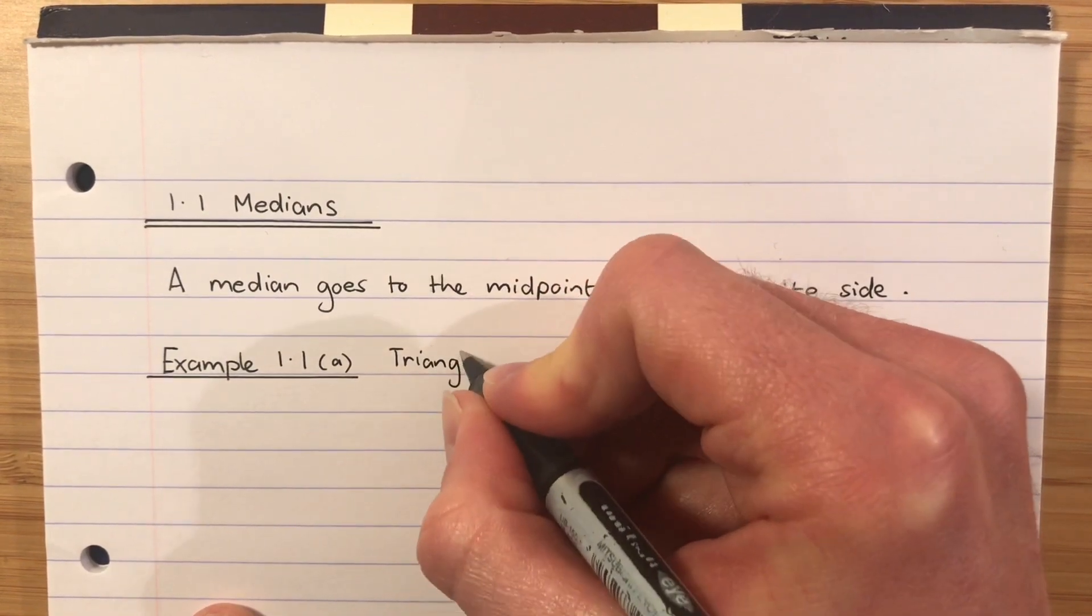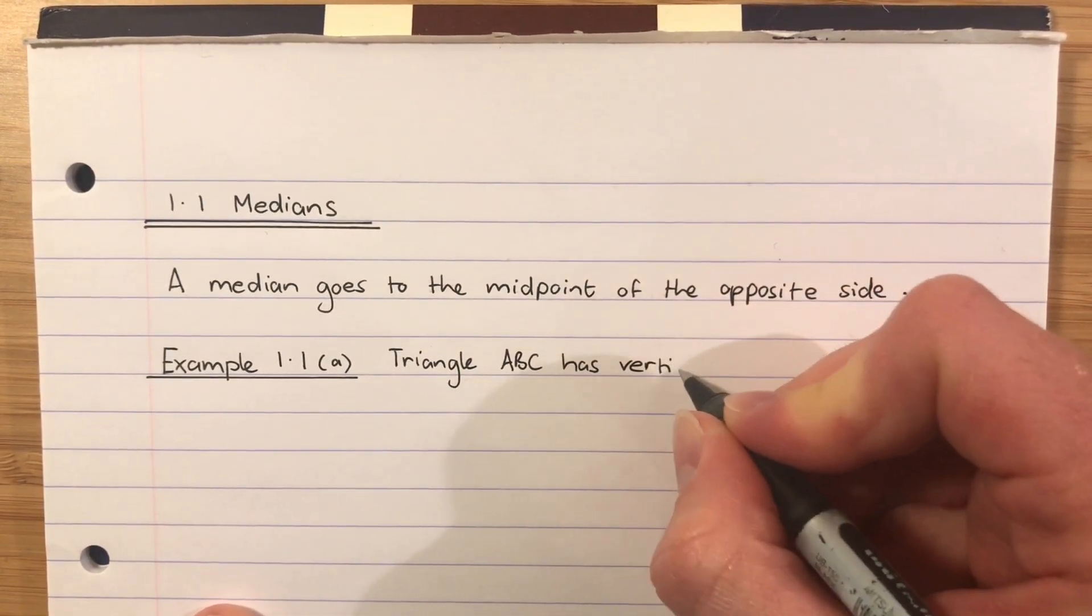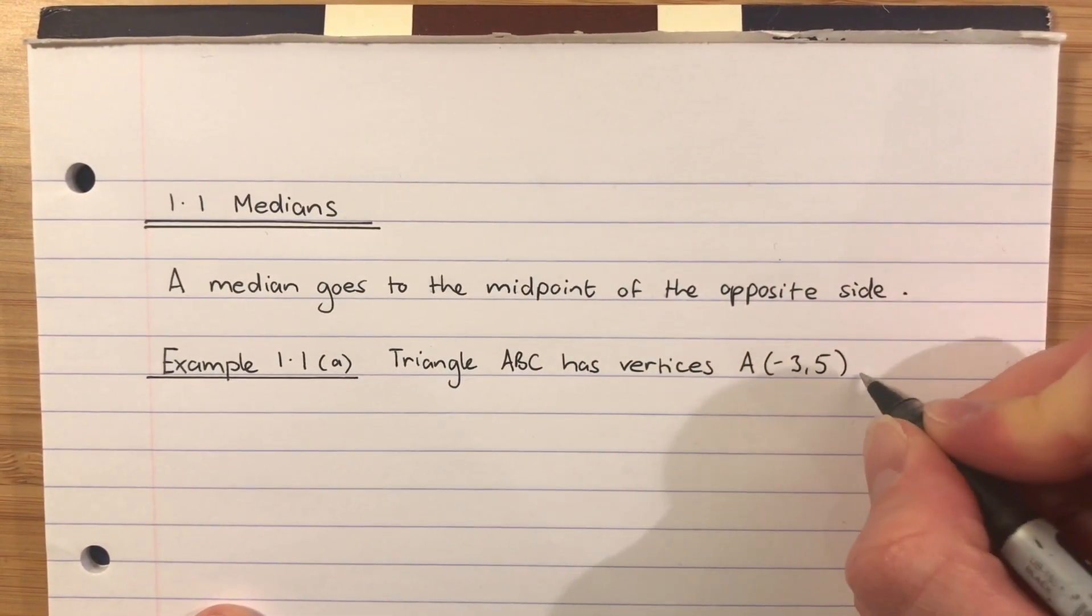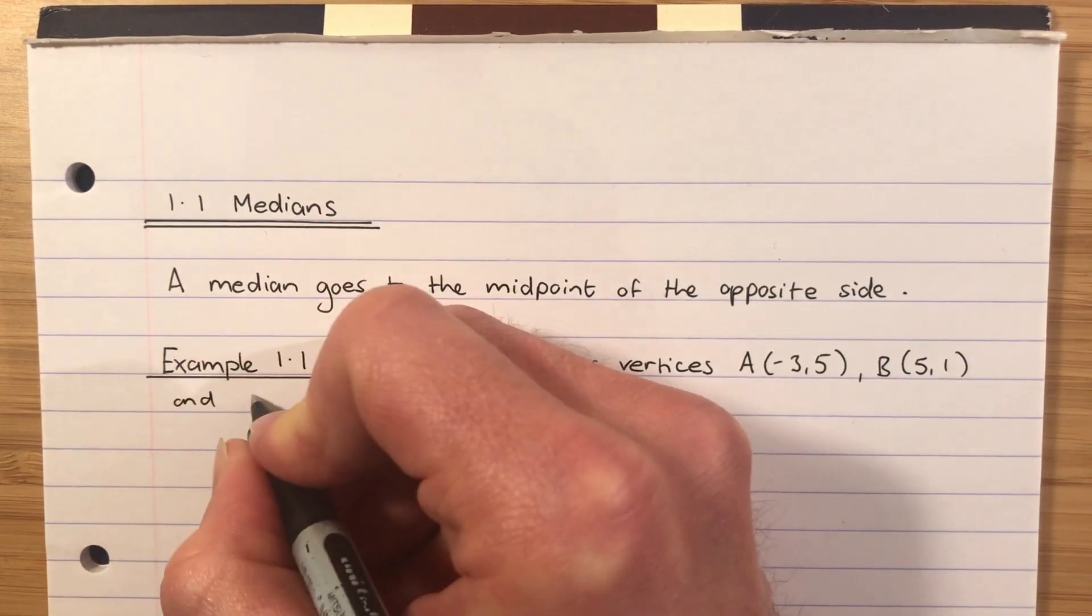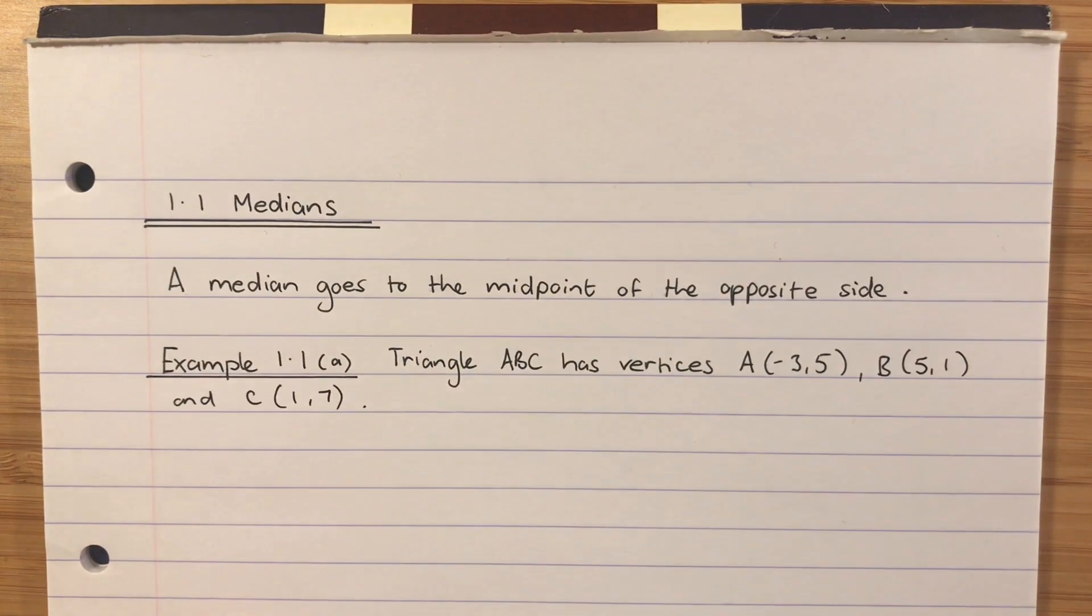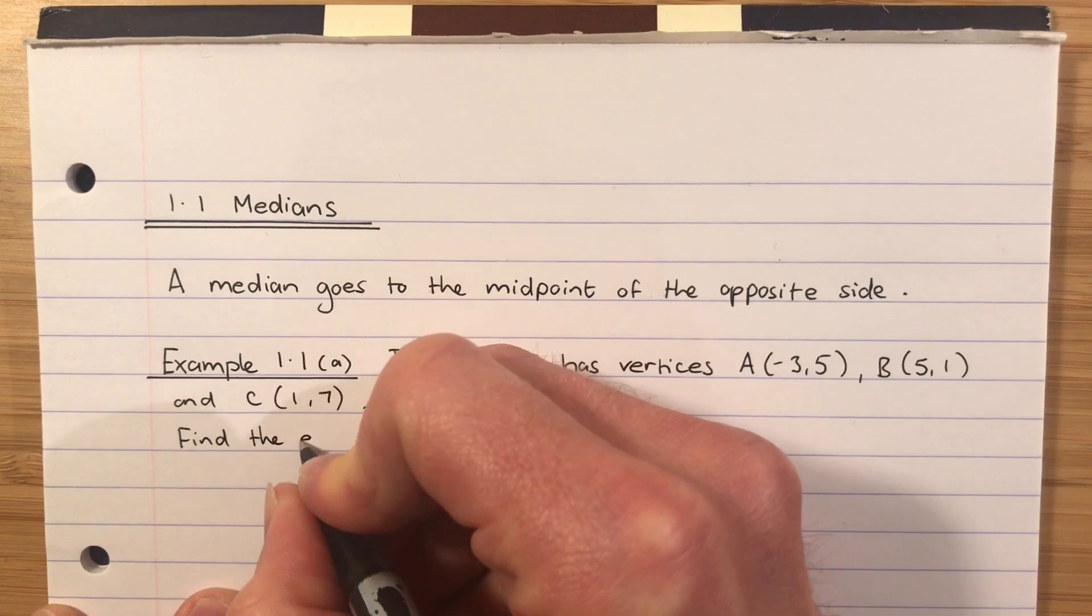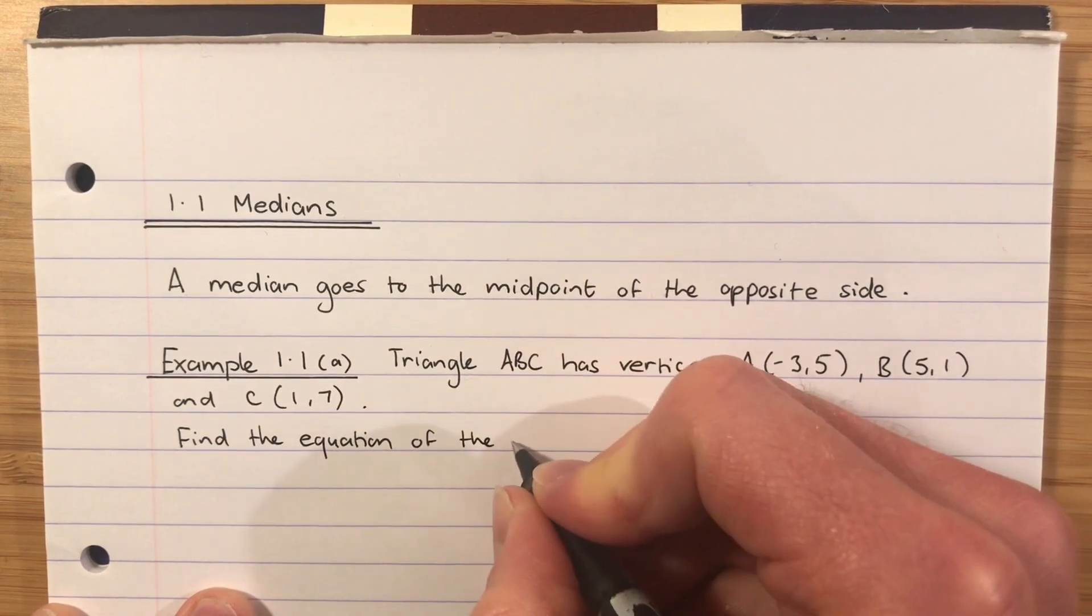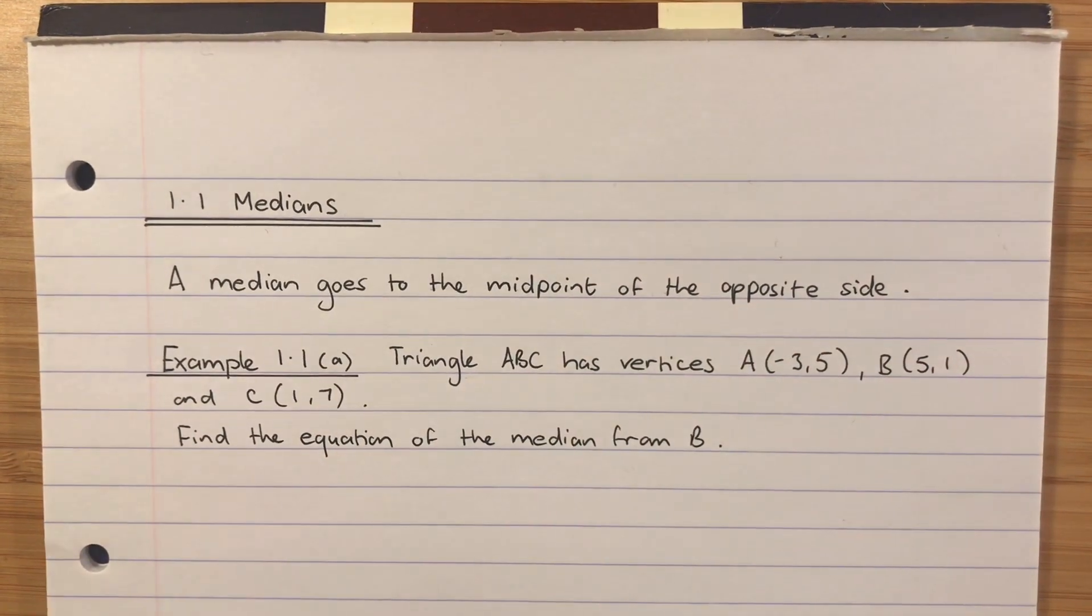Triangle ABC has vertices—vertices are just the points of the triangle. A has coordinates (-3, 5), B has coordinates (5, 1), and C has coordinates (1, 7). So triangle ABC has vertices A, B, and C as demonstrated. We're going to find the equation of the median from B.